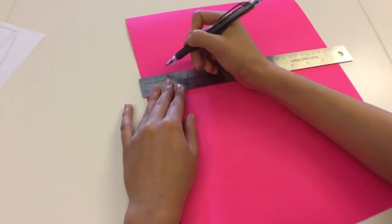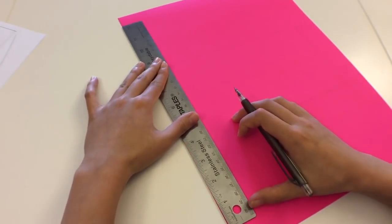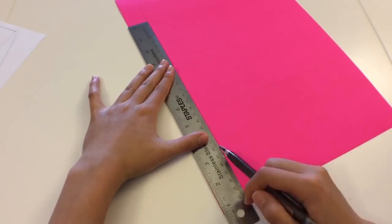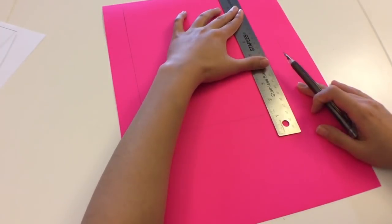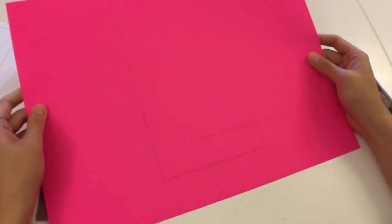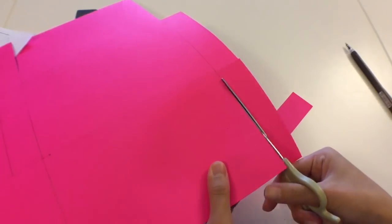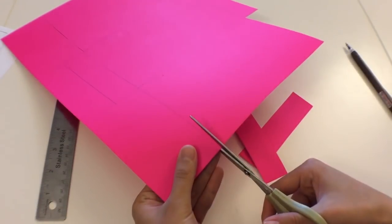And then you just want to transfer the whole design onto a bristol board or construction paper of your choice. And that's what I'm just doing here. I measured it out and drew out the lines, and then I just went ahead and cut out the outer lines.